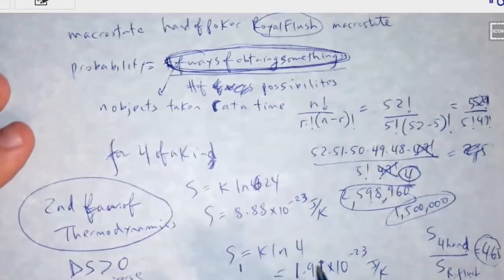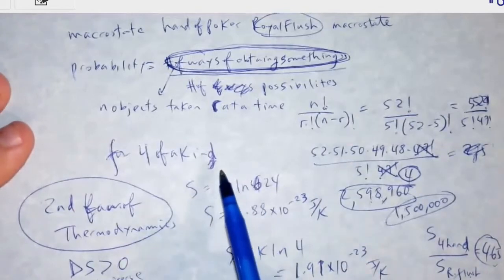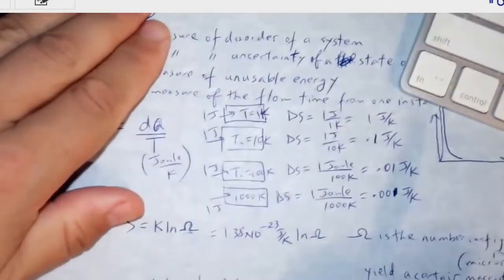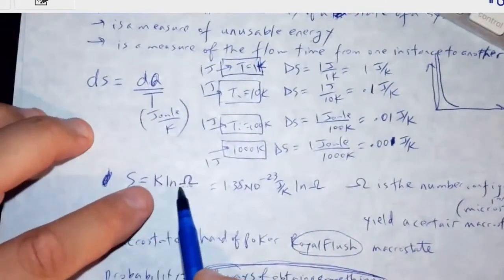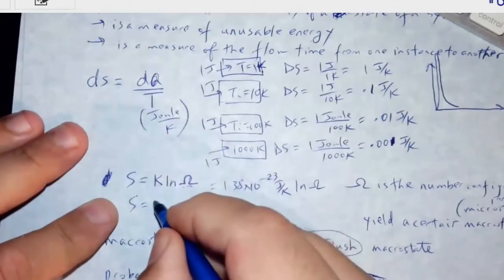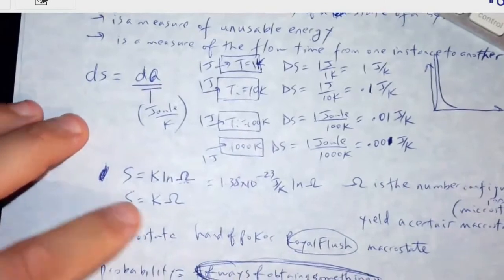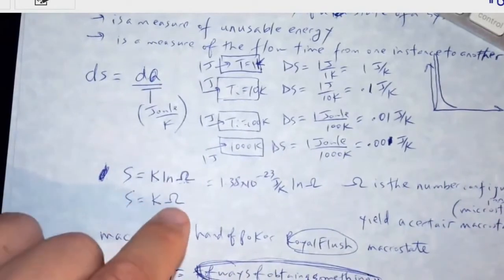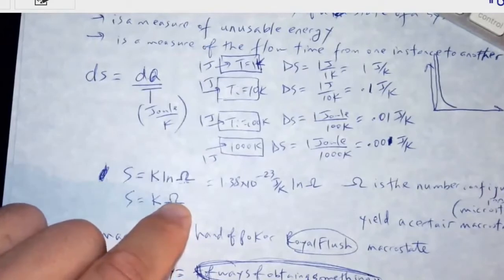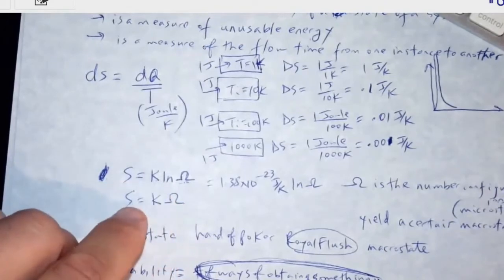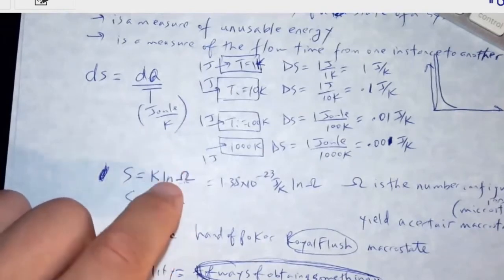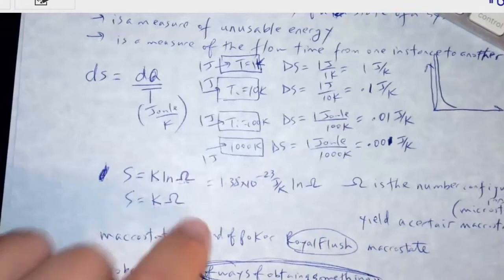Why did they define entropy with ln in the equation? Why couldn't they have written it as k times omega? That would still work because the more number of ways you could configure a system, the entropy would increase. Why did they decide to make it a logarithmic scale and not a straight up scale?